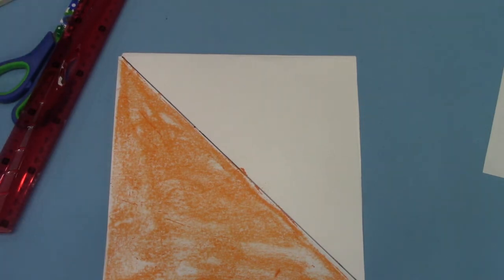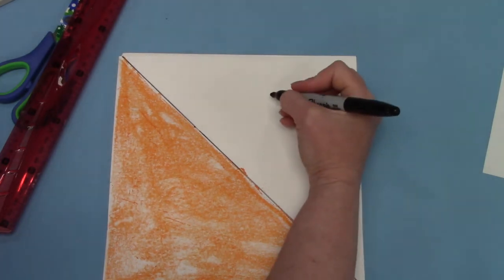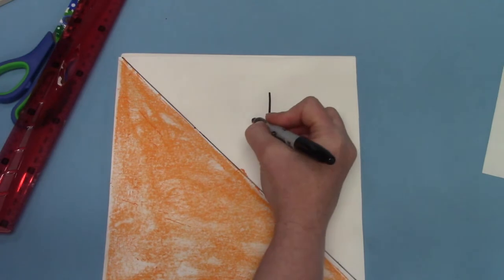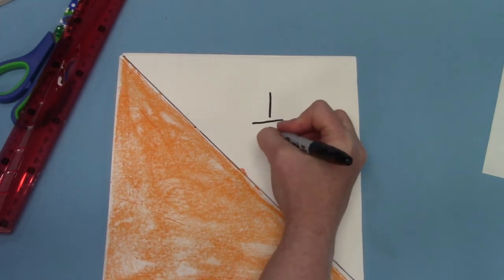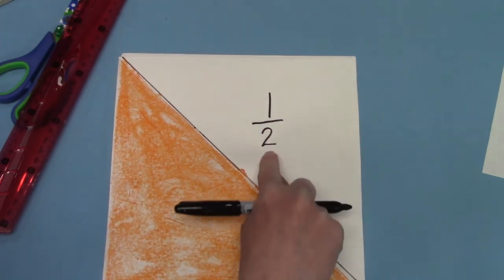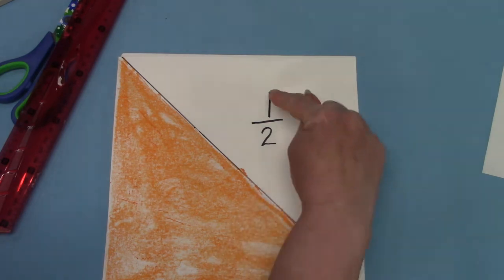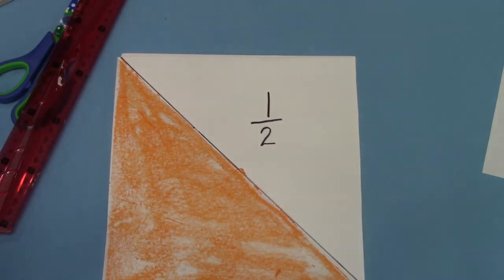Now this is a square divided into two pieces. When you have one half we write half as one out of the two pieces. One over the two. The two tells us that our square is divided into two pieces. And the one tells us that we have one out of the two that are colored.